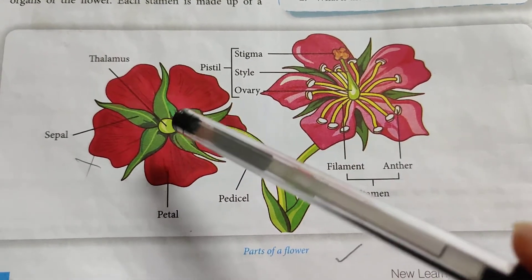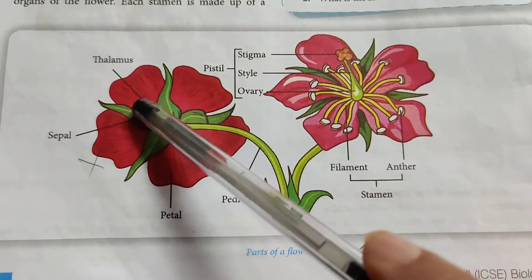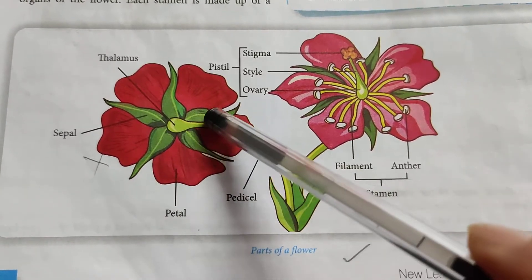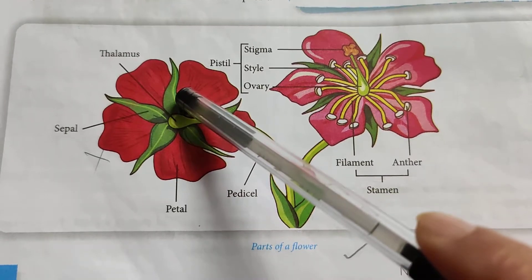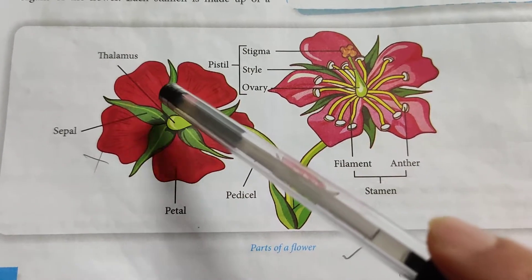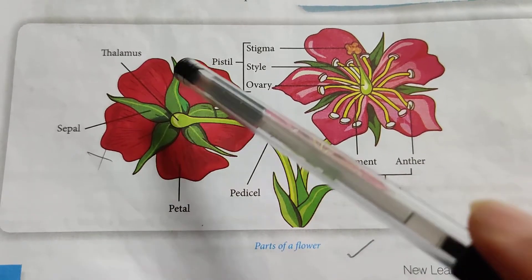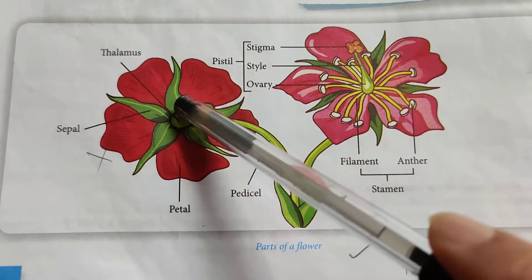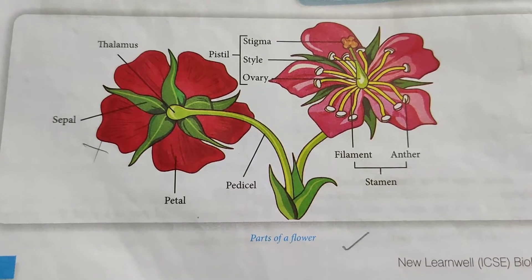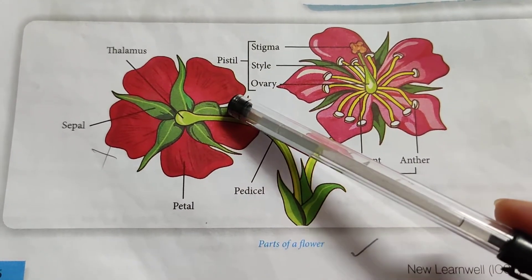There are four whorls of which a flower is made up of. The outermost whorl is the calyx — the green leafy structures that you can see. It is also called sepals. Calyx is there for the protection of the flower during the bud stage, and since it is green in color, it also prepares food for the plant by the process of photosynthesis.